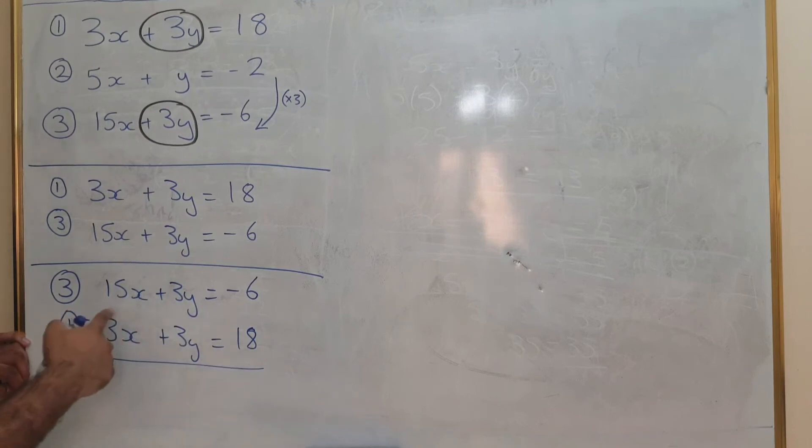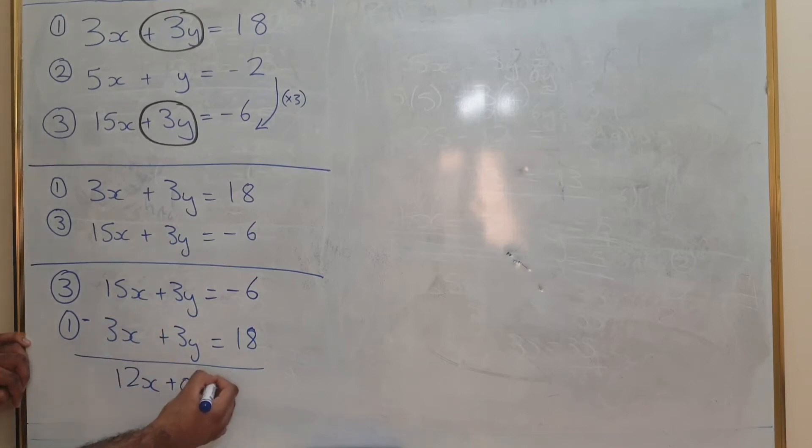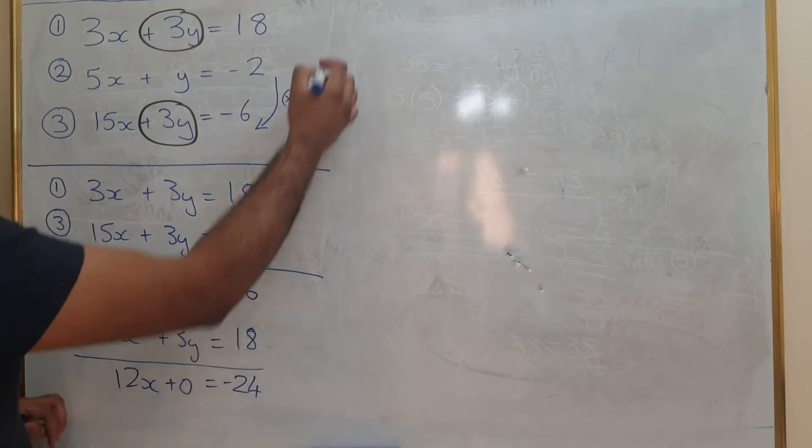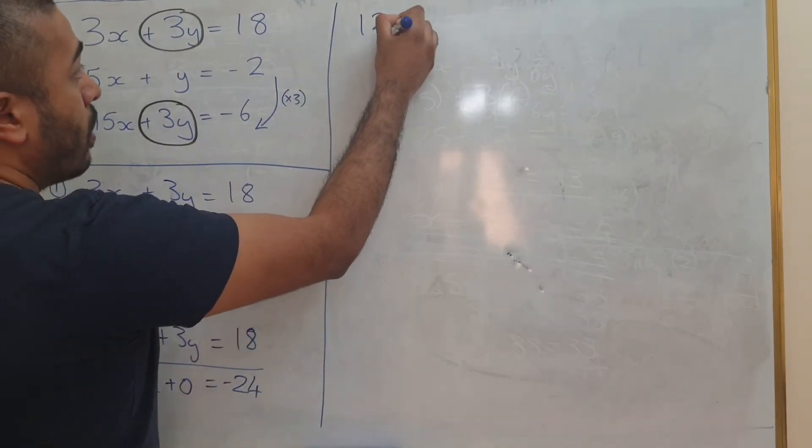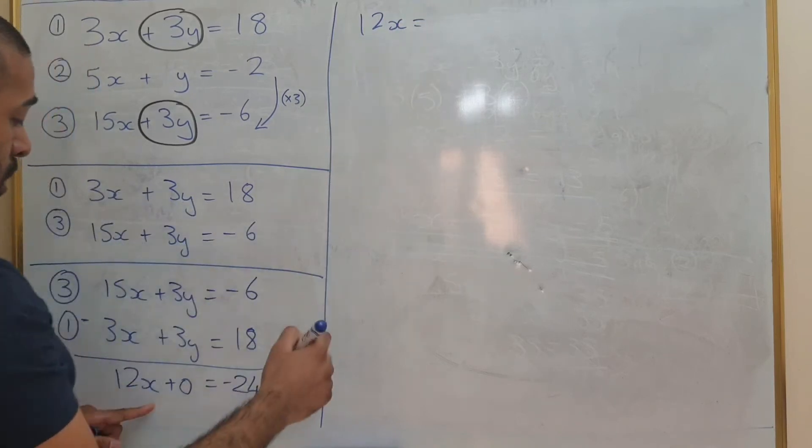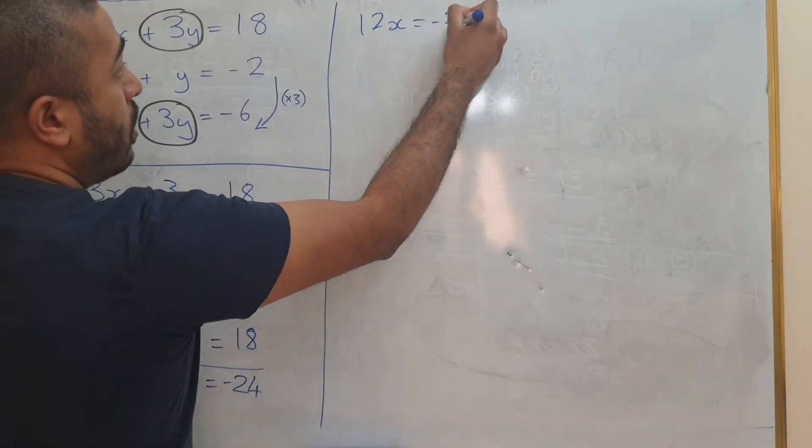Once I actually do that, 15x minus 3x is going to give me 12x. 3y minus 3y is 0. So minus 6 minus 18 is minus 24. We've got 12x equals minus 24.